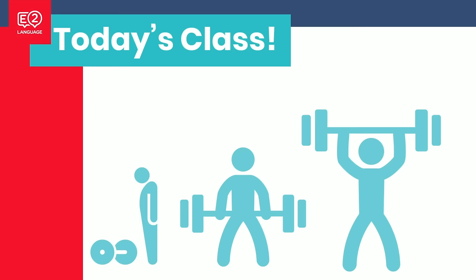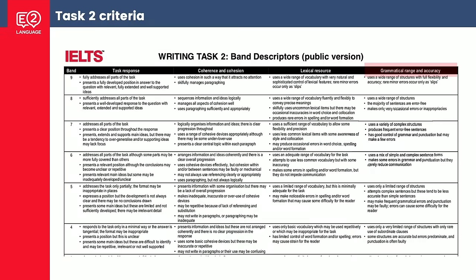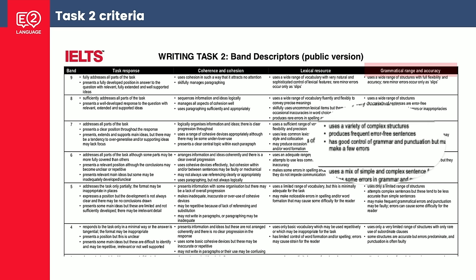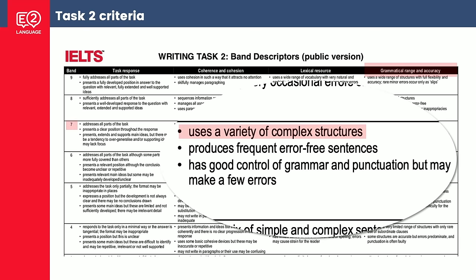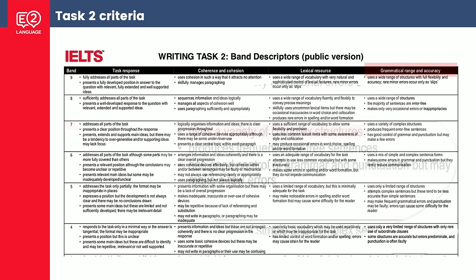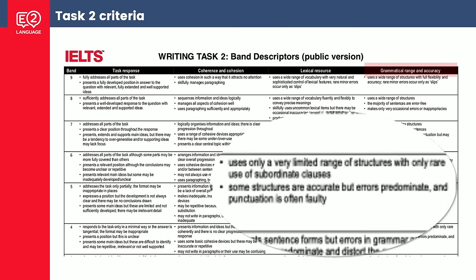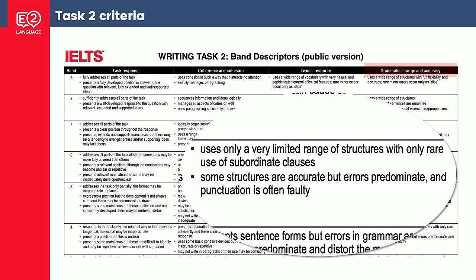So why do we need to look at complex sentences and subordinating conjunctions? Well, if you're preparing for the IELTS test, this is a really important part of your score, not just in writing but in speaking as well. Here's the criteria — on the right is the grammatical range and accuracy criterion. Band seven requires that you use a variety of complex structures, and a big problem for people is at band four, where it says uses only a very limited range of structures with only rare use of subordinate clauses.